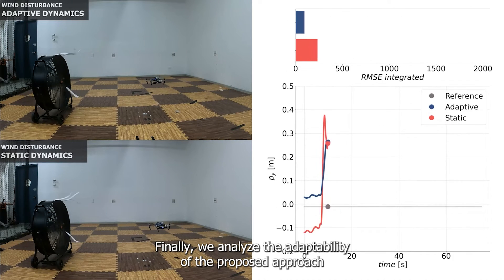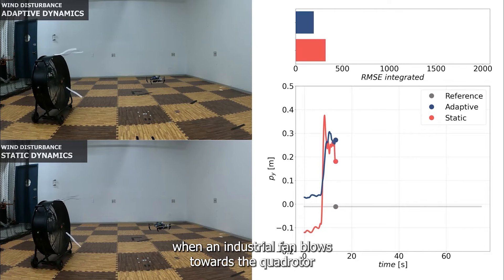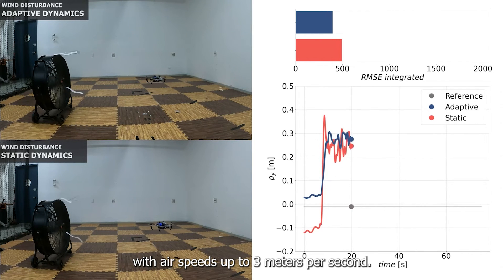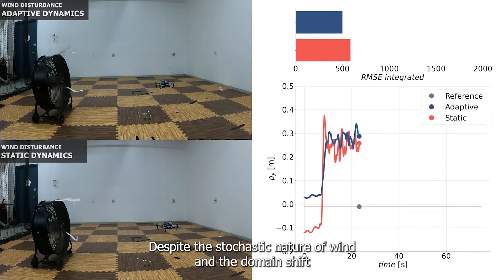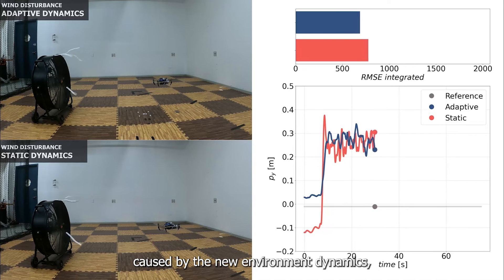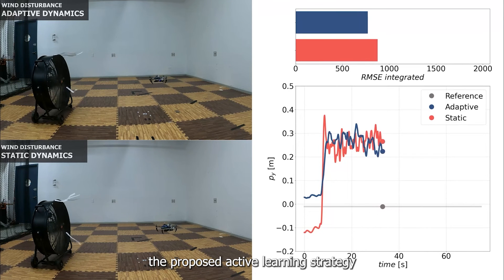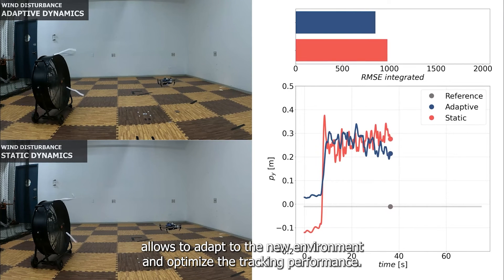Finally, we analyze the adaptability of the proposed approach when an industrial fan blows towards the quadrotor with air speeds up to 3 meters per second. Despite the stochastic nature of wind and the domain shift caused by the new environment dynamics, the proposed active learning strategy allows us to adapt to the new environment and optimize the tracking performance.